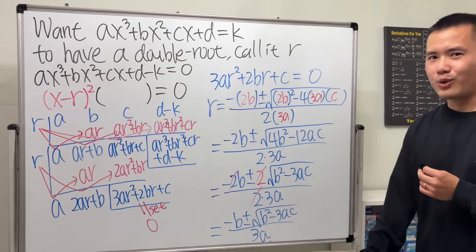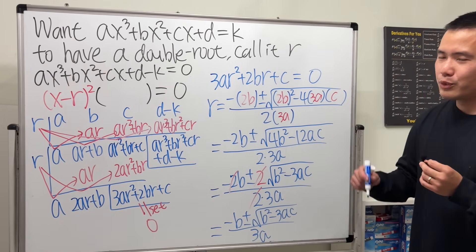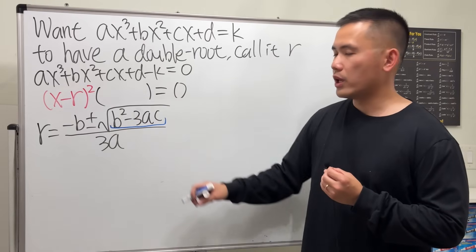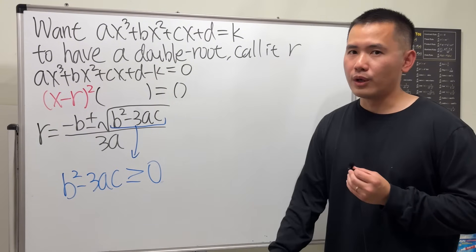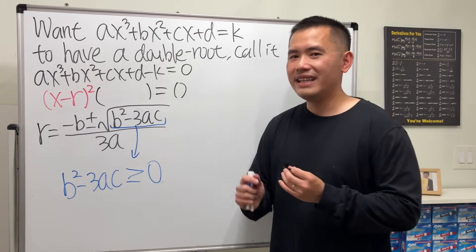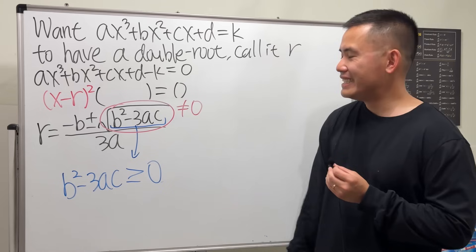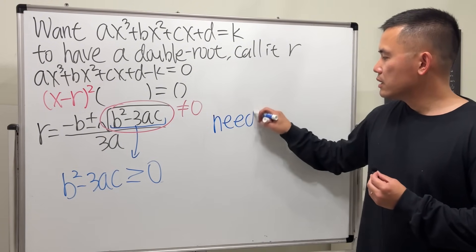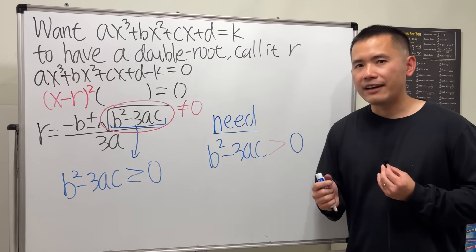Look — this is just like the quadratic formula, isn't it? But here we have minus 3ac and 3a instead. To make sure the results are real, we need the inside of the square root to be non-negative: b squared minus 3ac must be greater than or equal to 0. And to ensure we get two different r values — one for local min and one for local max — the square root part cannot equal zero. Combining these two conditions, we need b squared minus 3ac to be strictly greater than 0.